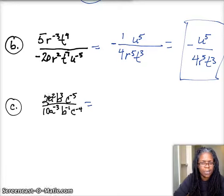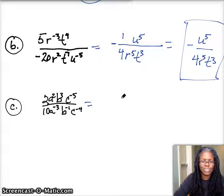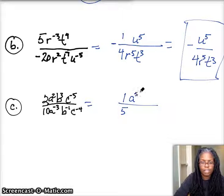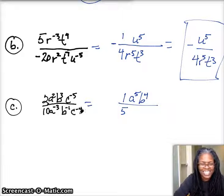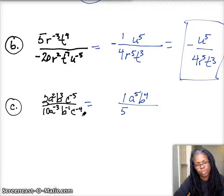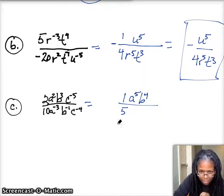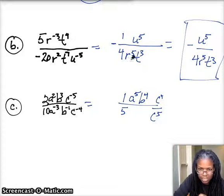Alright, one last example. We do the same thing with the two regular numbers: 2 over 10 becomes 1 over 5. Then for the a's: a to the negative third power in the denominator raises up to the numerator as a to the third, so we get a to the fifth total. B to the negative first raises up to become b to the first in the numerator, added to b to the third gives b to the fourth. For the c's: c to the negative fifth and c to the negative fourth — I'm going to have c to the fourth over c to the fifth, which cancels down to c to the first in the denominator.